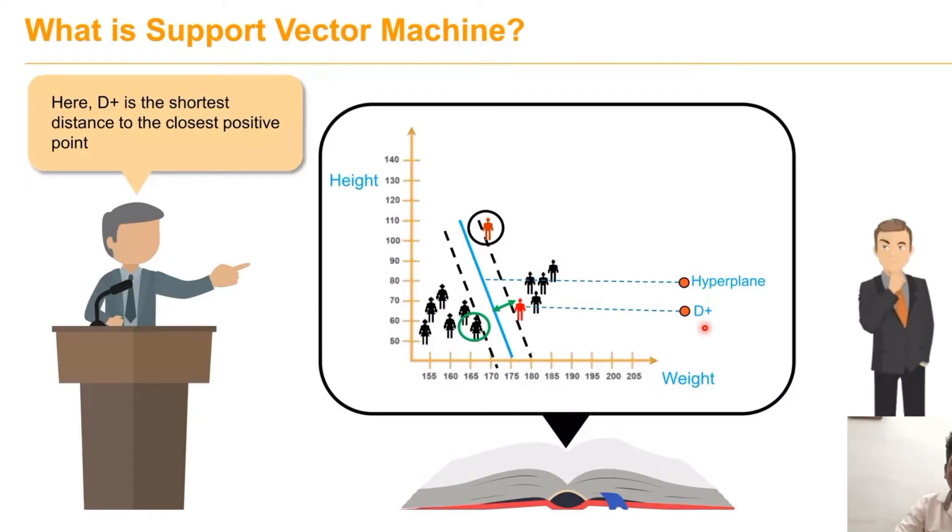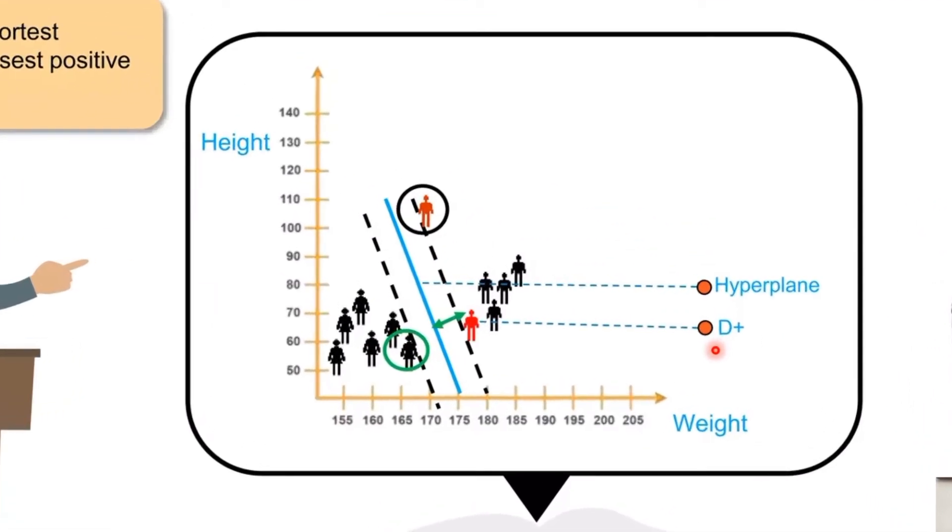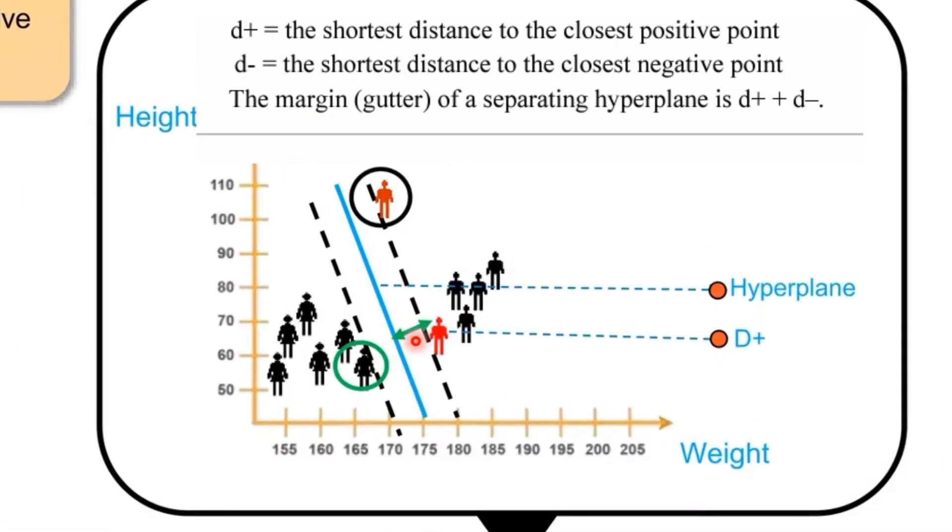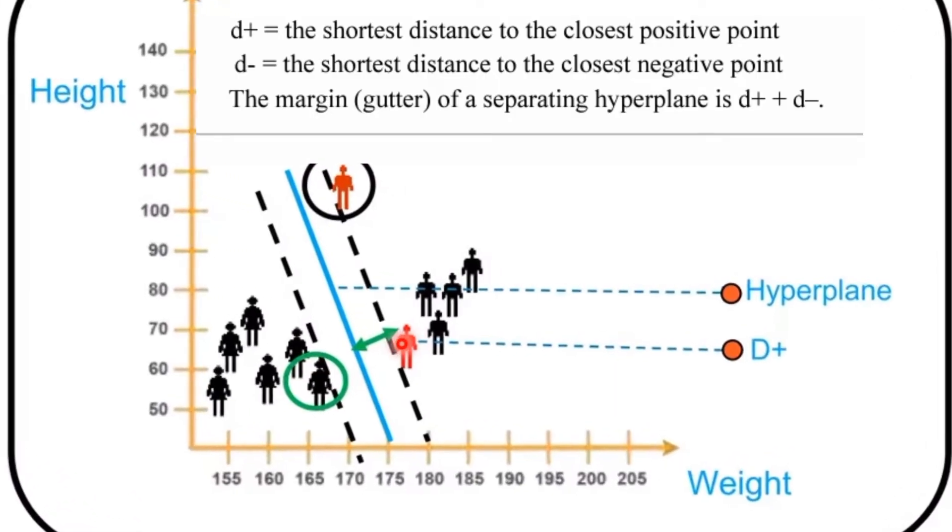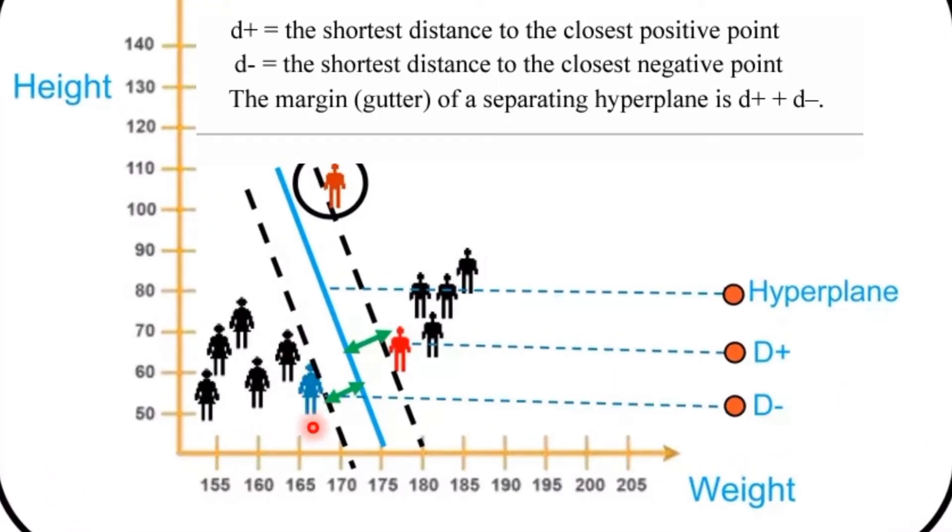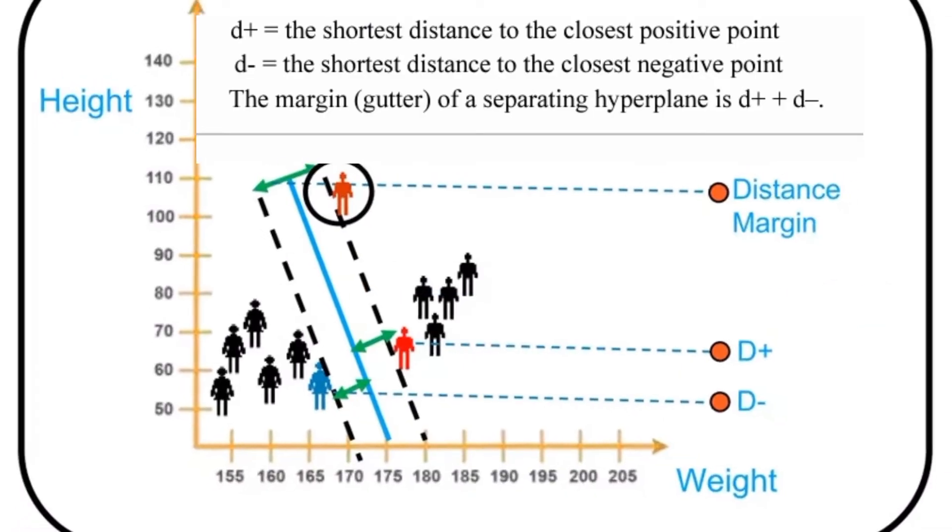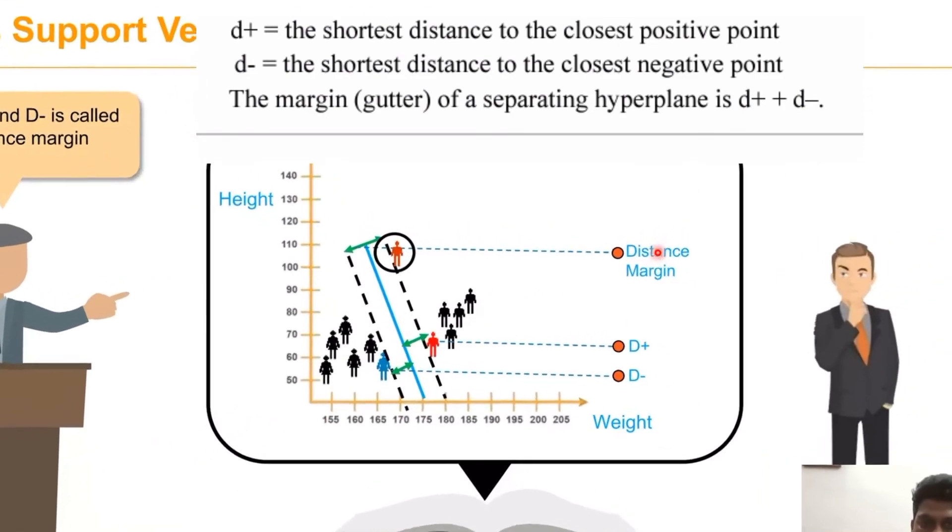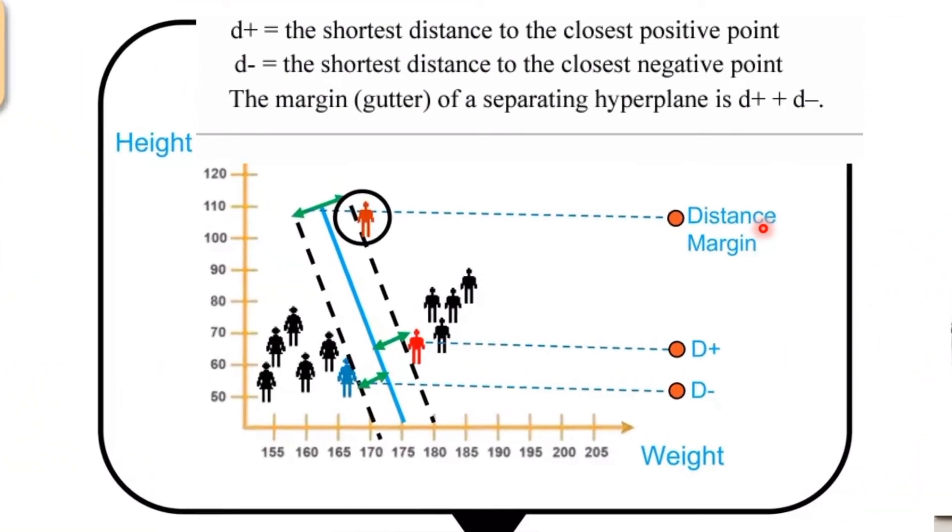The distance d+ represents the shortest distance to the closest positive point, and d- refers to the shortest distance to the closest negative point. The sum of d+ and d- refers to the distance margin.